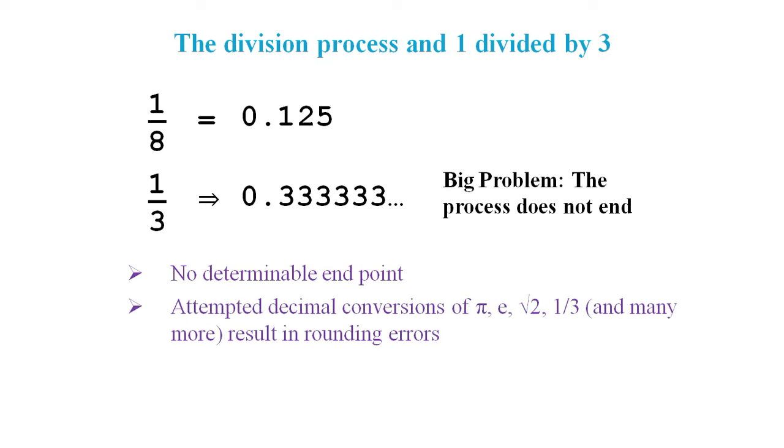We can of course use values like pi, e, the square root of 2, and 1/3 in equations. It's only when we try to convert these values to decimal numbers that we encounter this endlessness problem. And since the decimal expansion has no endpoint, we are forced to introduce a rounding error if we want a numeric answer.